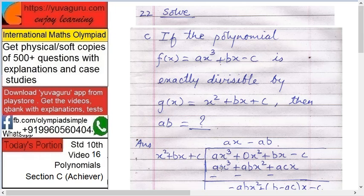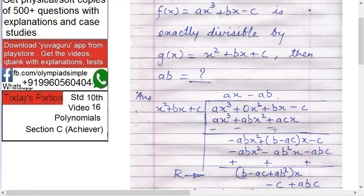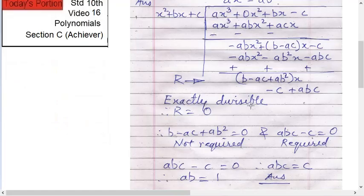So first with first you get ax. And the answer is ax³ here, abx², then cax over here. And then subtract it. Some sign change. You get -abx² + (b - ac)x - c. Now again first with first you get -ab. So what you get in the second line is -abx² - ab²x - abc. Multiply this full with -ab. Change the signs.